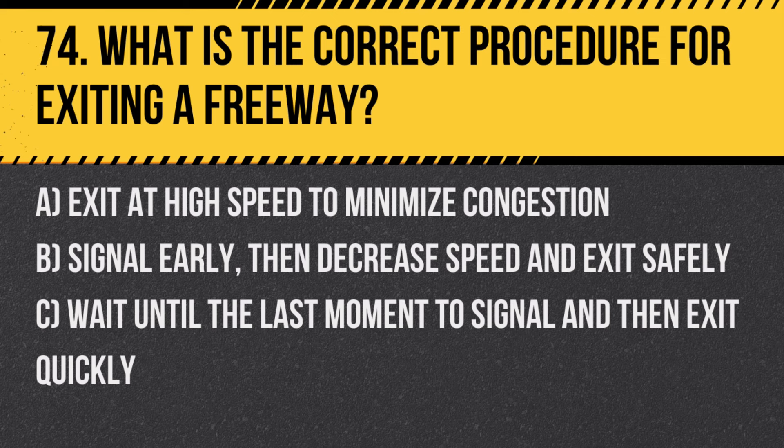Question 74: What is the correct procedure for exiting a freeway? A. Exit at high speed to minimize congestion. B. Signal early, then decrease speed and exit safely. C. Wait until the last moment to signal and then exit quickly. Answer: B. Signal early, then decrease speed and exit safely. Proper signaling and speed adjustment are crucial for a safe freeway exit.